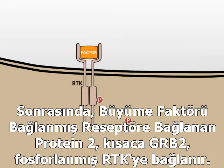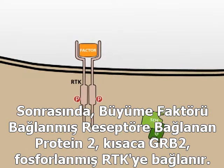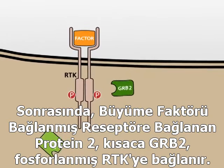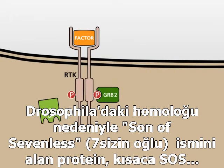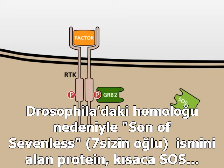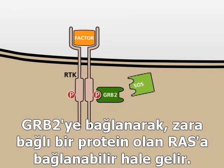Next, the growth factor receptor-bound protein 2, GRB2 for short, can bind to the phosphorylated RTK. The protein SOS, named after its homologue Son of Sevenless in Drosophila, is able to bind to the membrane-bound protein RAS.